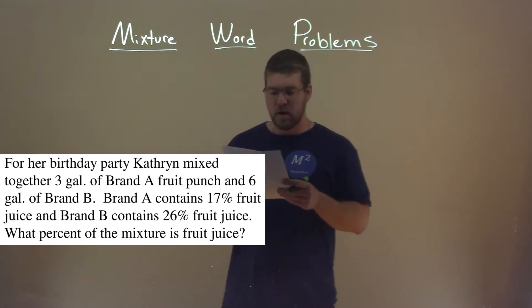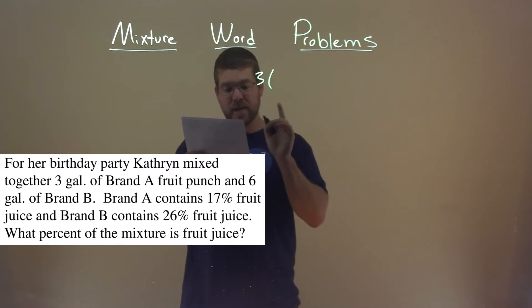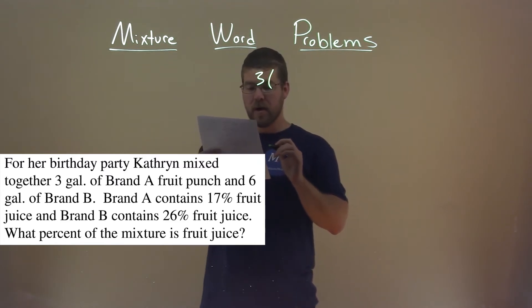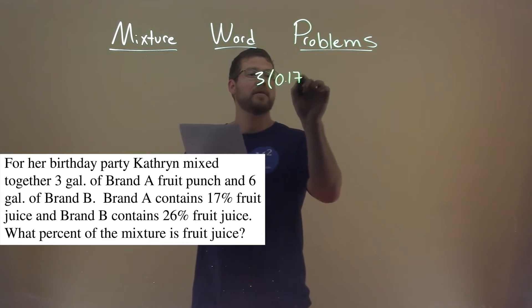Let's start with brand A. Brand A had three gallons, and that contained, they tell us here, 17%. So that's a decimal, 0.17.